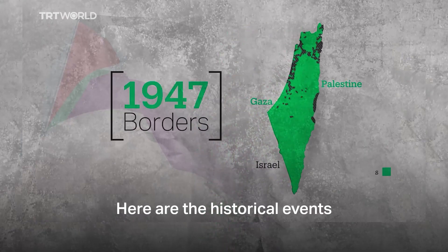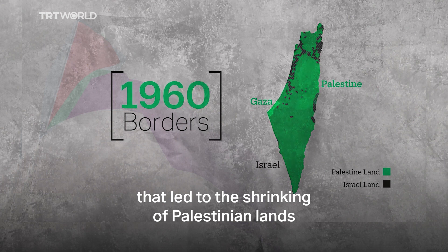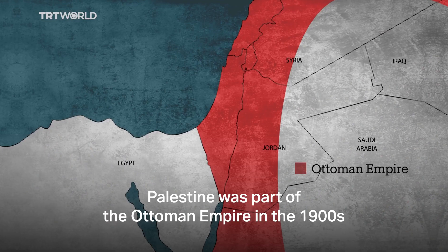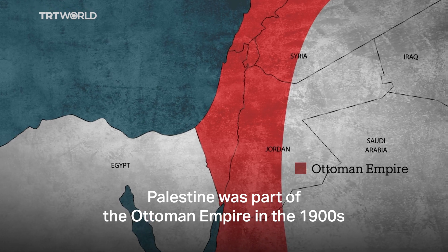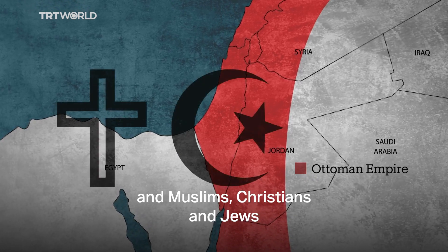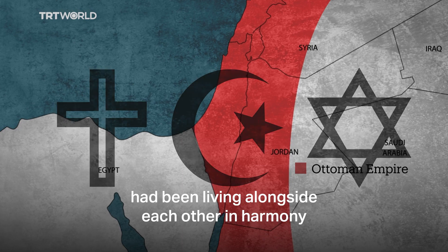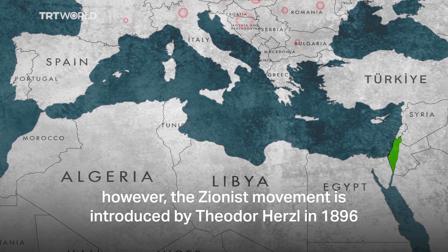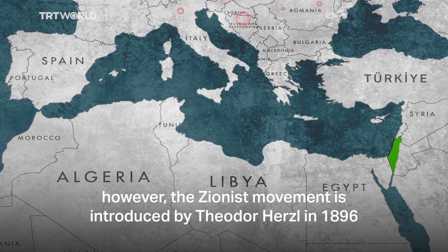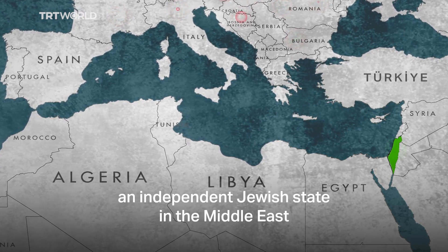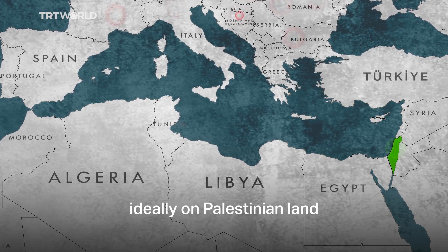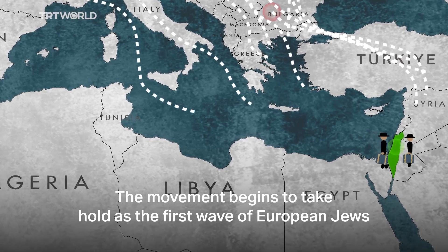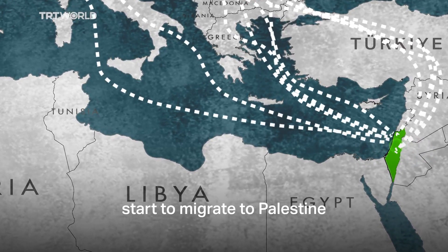Here are the historical events that led to the shrinking of Palestinian lands and the foundation and expansion of the State of Israel. Palestine was part of the Ottoman Empire in the 1900s, and Muslims, Christians, and Jews had been living alongside each other in harmony. On the European continent, however, the Zionist movement was introduced by Theodor Herzl in 1896, aiming to create an independent Jewish state in the Middle East, ideally on Palestinian land. The movement begins to take hold as the first wave of European Jews start to migrate to Palestine.